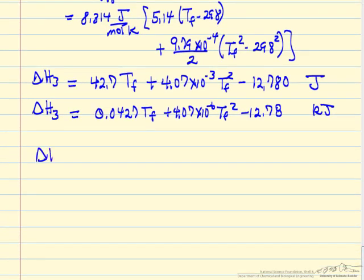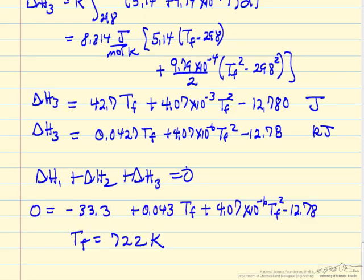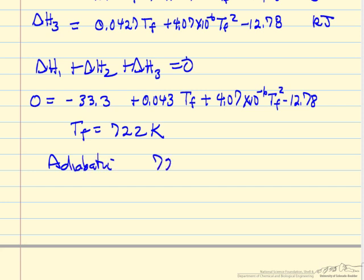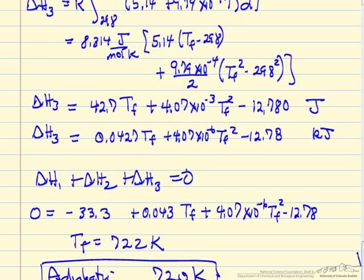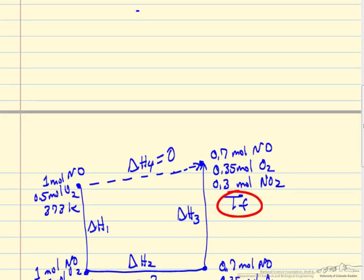What we're going to do is say delta H1 plus delta H2 plus delta H3 should add up to 0. Substituting in the values for delta H1, delta H2, delta H3, we calculate, and just adding them together, we get this equation, which is a quadratic equation we can solve for the final temperature. The adiabatic temperature is around 722 Kelvin for this problem where we have 30% conversion, certainly higher than our starting temperature as we'd expect for an exothermic reaction. What we've done is take advantage of state function to calculate the temperature here because adiabatic means delta H is 0, and we've just added up these three delta H terms in this calculation.